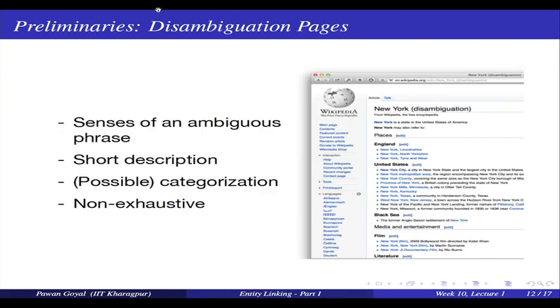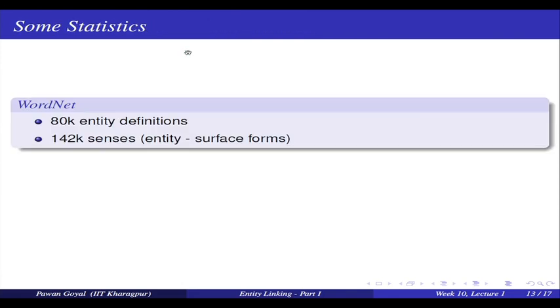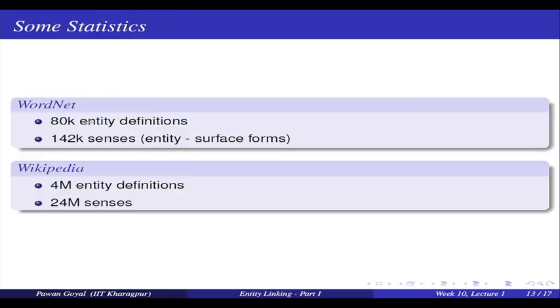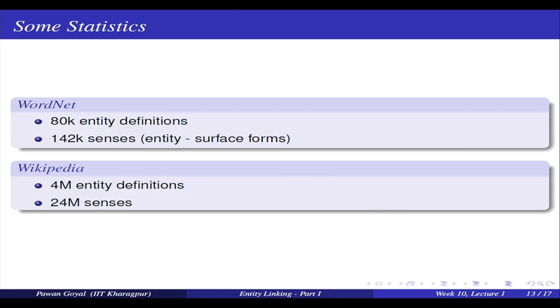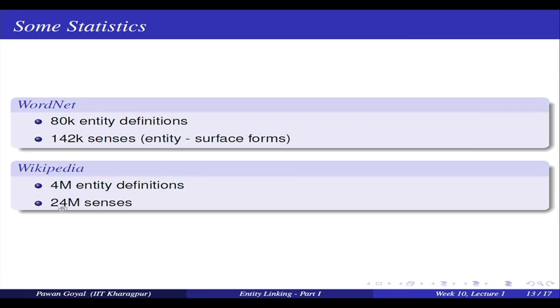We talked about WordNet for word sense disambiguation — given a sentence, find what is the appropriate sense of each word in WordNet. In WordNet we had roughly 80,000 different entity definitions and 142,000 different senses. Wikipedia is a much larger repository: overall there are 4 million different entity definitions, and this keeps increasing, with 24 million different senses. Our task is, from all these 24 million senses, given a text find what entities are important and which sense they correspond to.